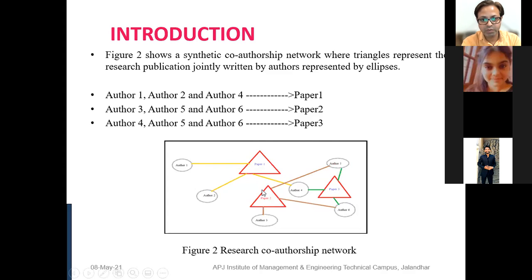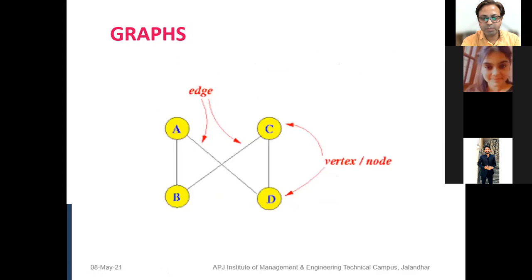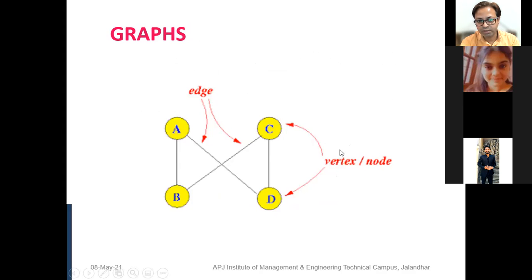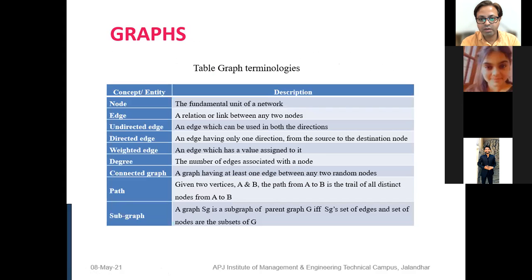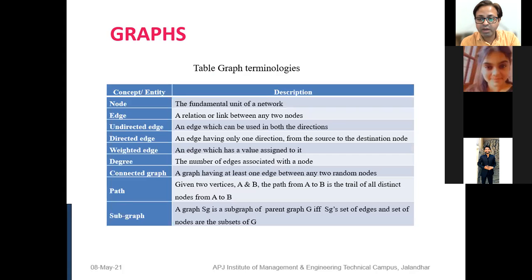We learned the basic terminology of graphs, which you may have already covered in basic mathematics. The lines connecting any two nodes are called edges, and any entity or individual being discussed is called a node or vertex. An important fundamental term is degree — how many edges are connected to your node. How many are incoming towards you is your in-degree, and how many are outward connecting your node to other nodes is your out-degree.